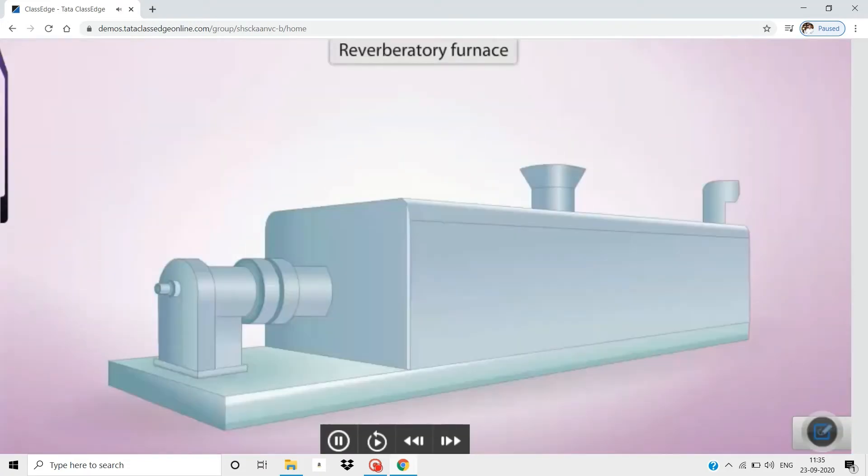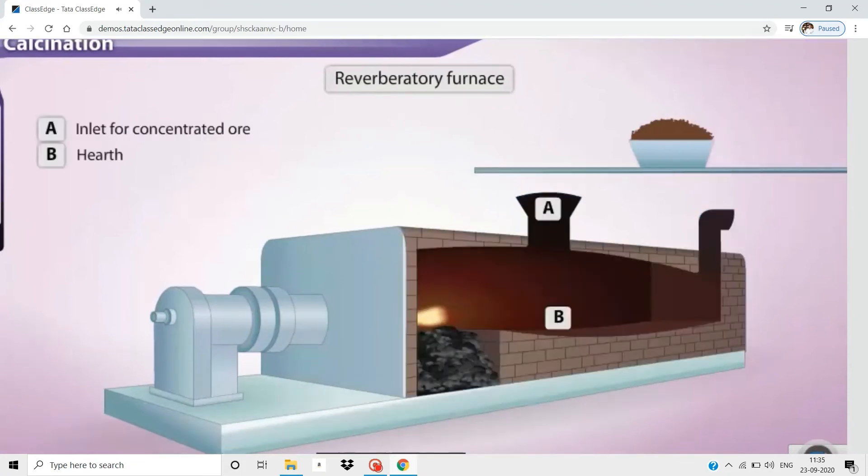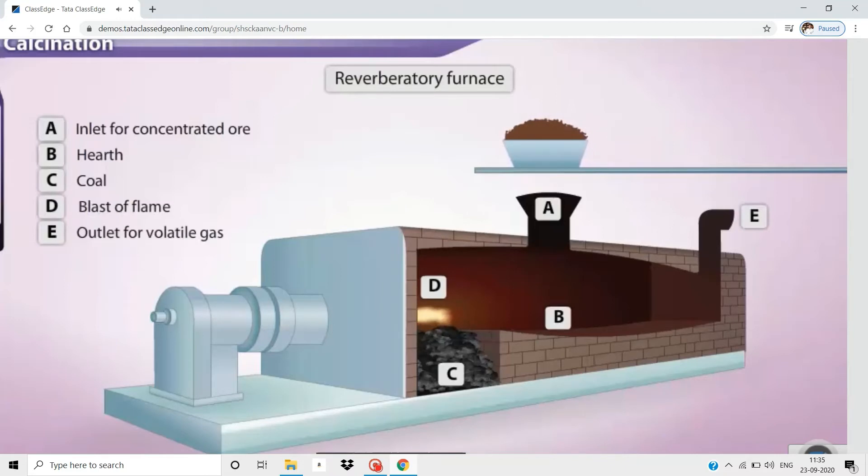The second stage of iron extraction takes place in a reverberatory furnace. Concentrated ore is poured onto the hearth of a reverberatory furnace. Click the concentrated ore to add it to the furnace.